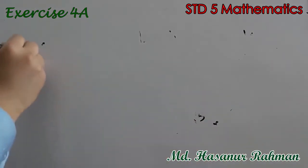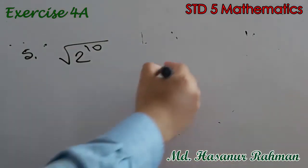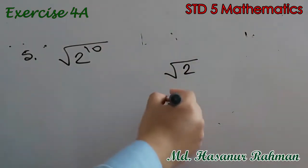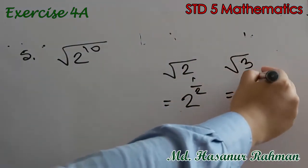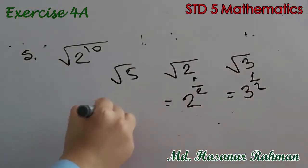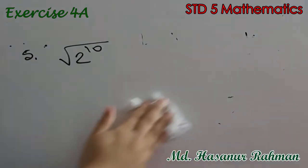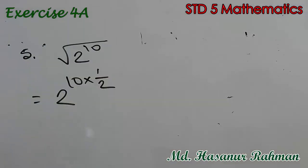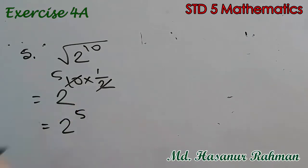Number 5 says root over 2 to the power 10. What is a square root? Square root of a number means the power will be half — for example, square root of 2 means 2 to the power half, square root of 3 means 3 to the power half. So root over 2 to the power 10 means 2 to the power 10 into half, and 10 divided by 2 is 5, so our answer will be 2 to the power 5.